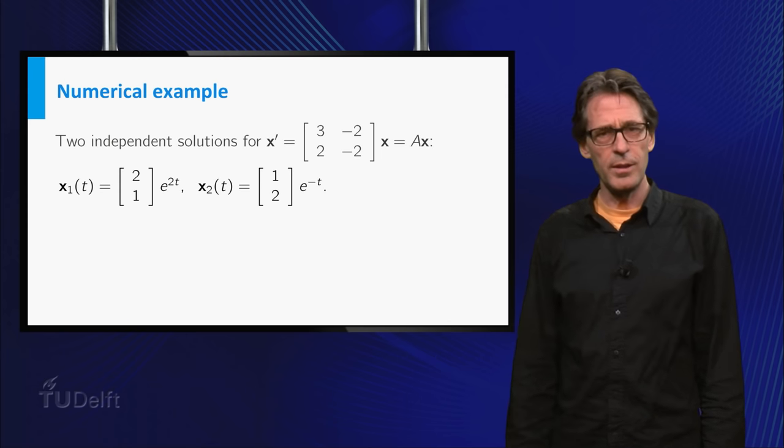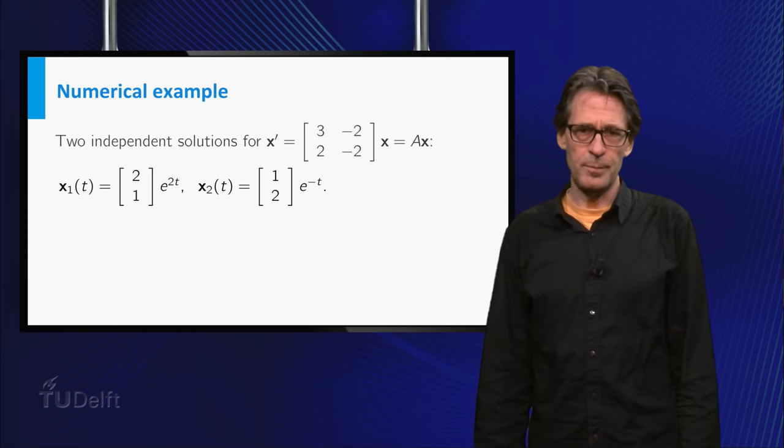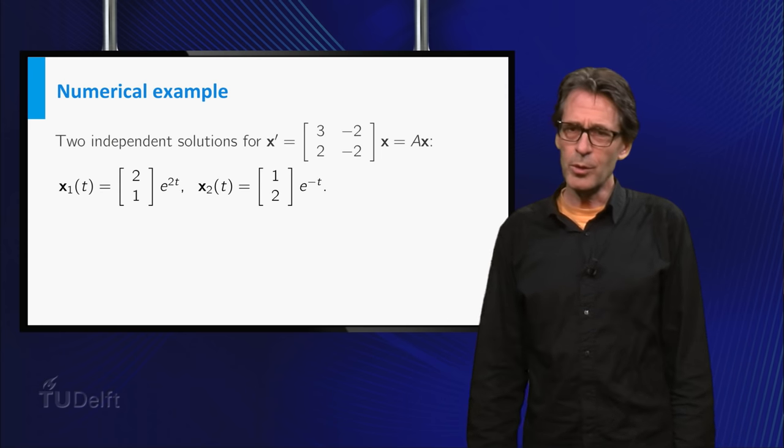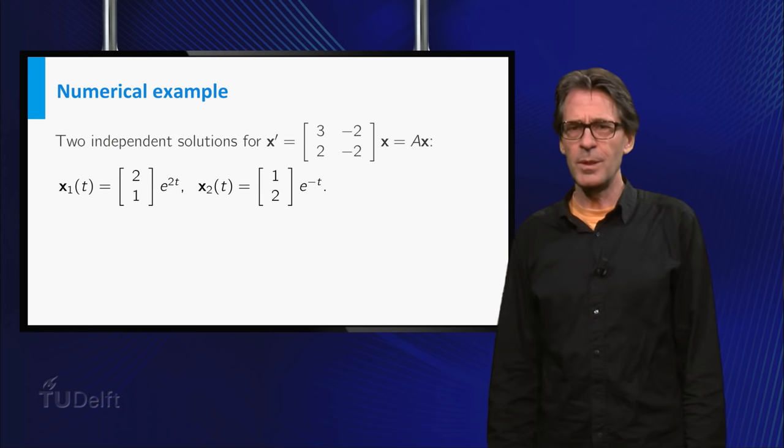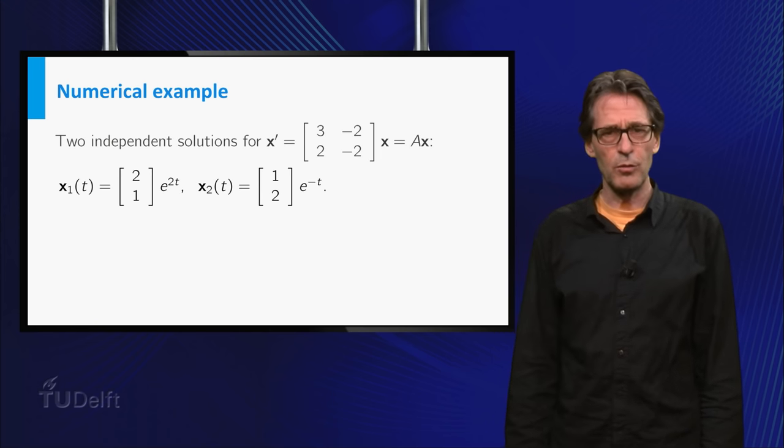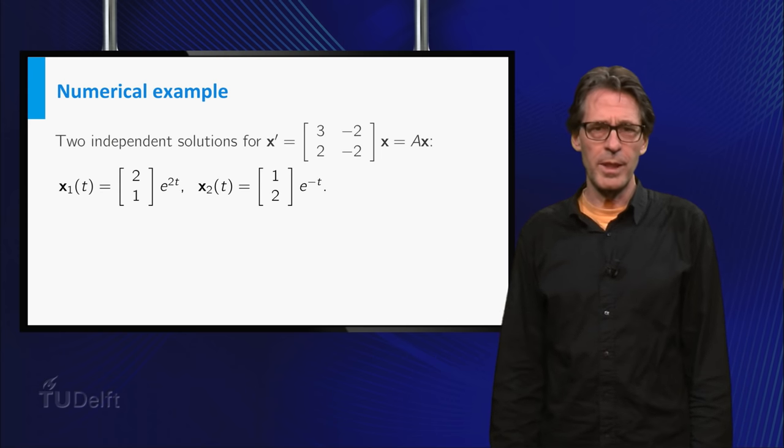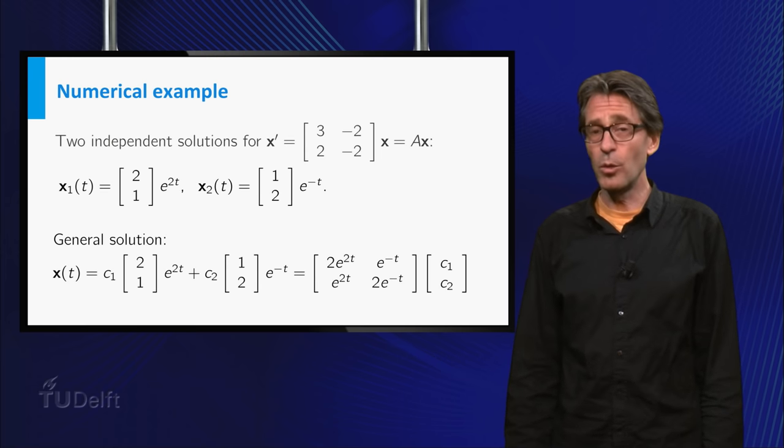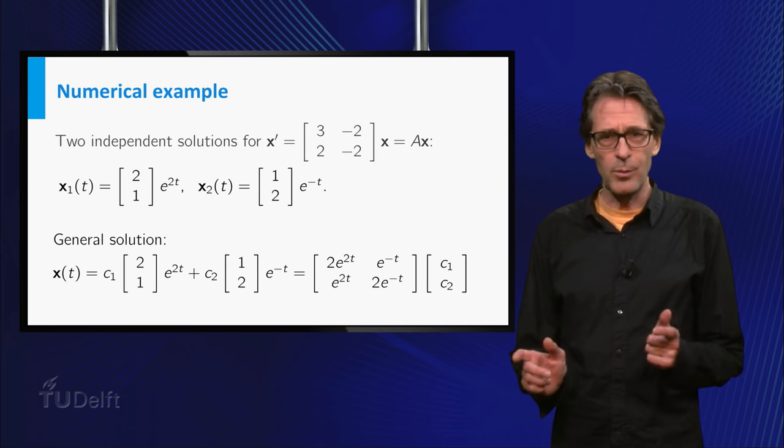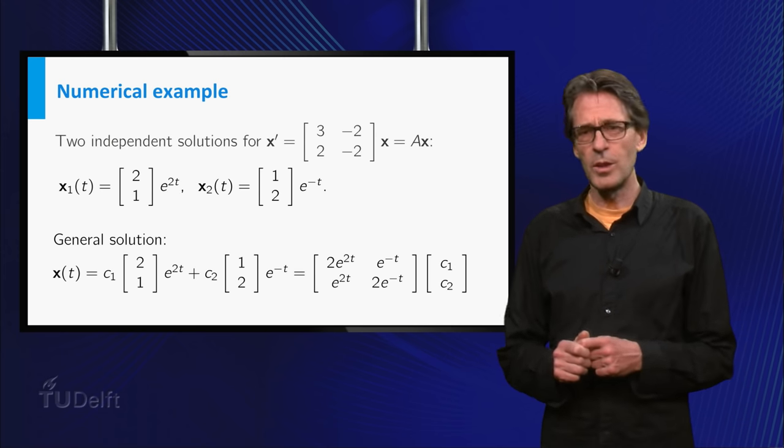Note that the solutions are linearly independent, which in this case means that neither of the vector functions is a multiple of the other. Because the system x' equals Ax is a linear system, it follows from elementary properties of matrix multiplication and differentiation that every linear combination is a solution as well. In fact, these are all possible solutions, but this I will not prove here. So the general solution becomes as shown here.